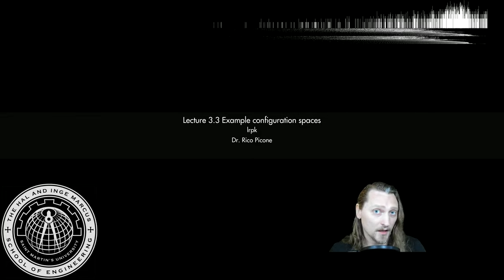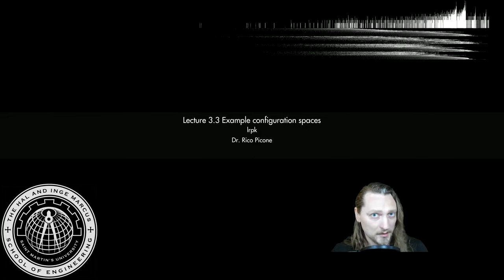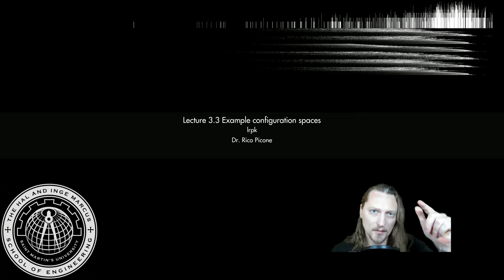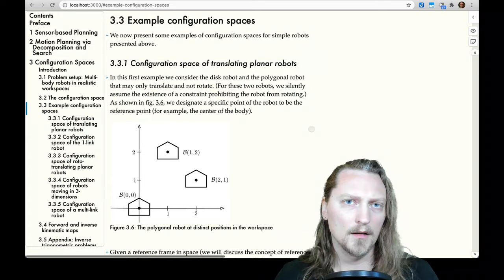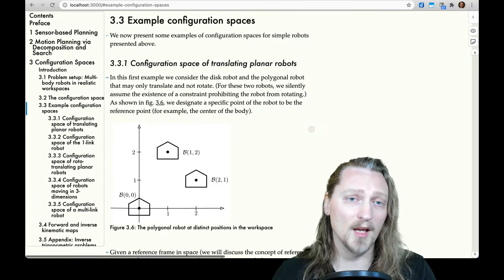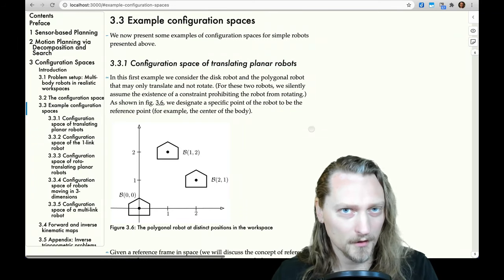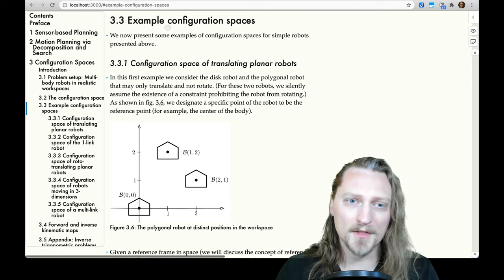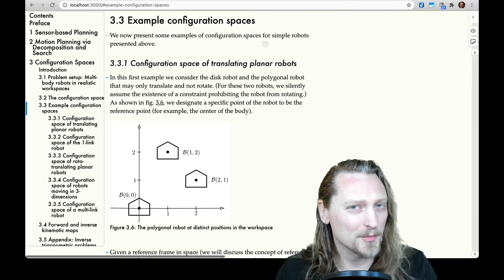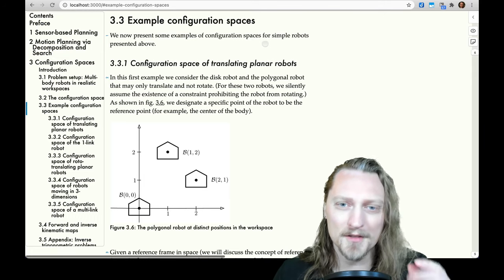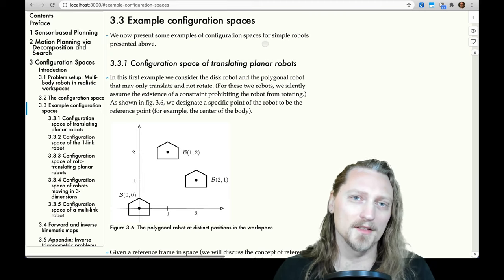Dr. Rico here. This is a lecture from my mini-course, Robotic Planning and Kinematics. The syllabus and notes are in the description. Section 3.3 Example Configuration Spaces, part of the chapter on configuration spaces. We now present some examples of configuration spaces for simple robots presented above.